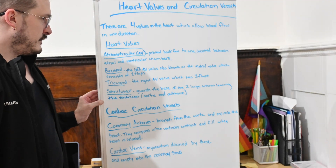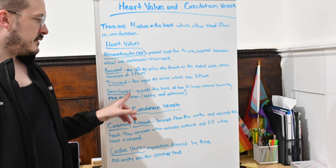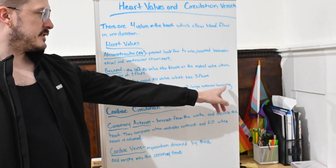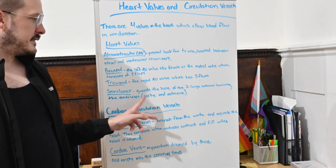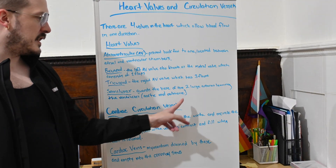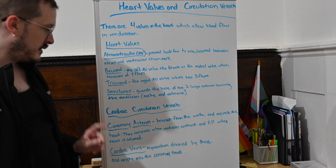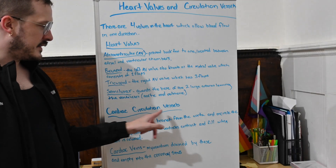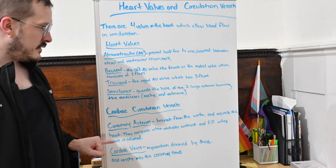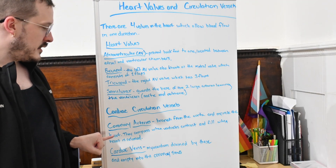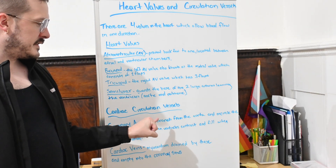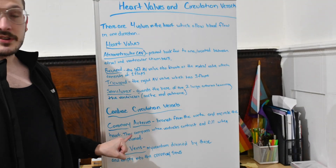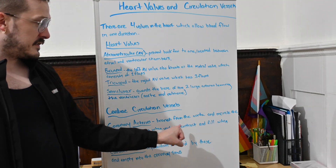The semilunar valves guard the base of the two large arteries leaving the ventricles — both the aortic and pulmonic valves. The cardiac circulation vessels include the coronary arteries, which branch from the aorta and encircle the heart. They compress when the ventricles contract and fill when the heart is relaxed.